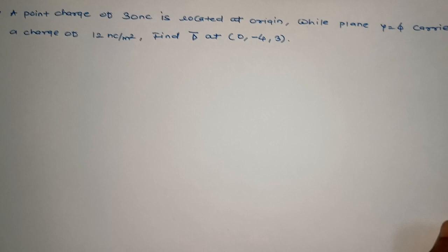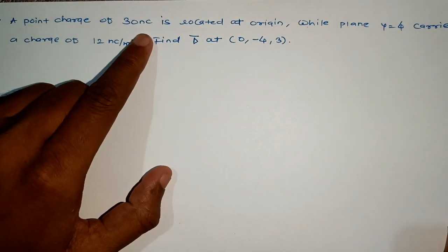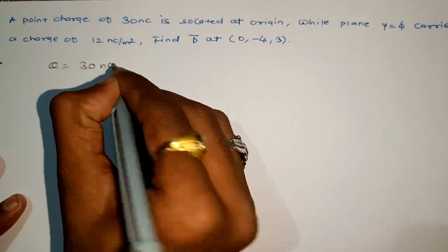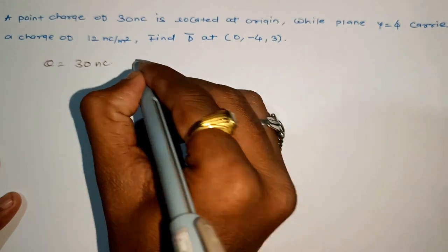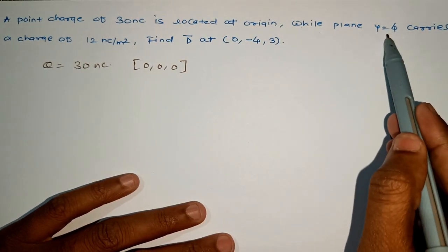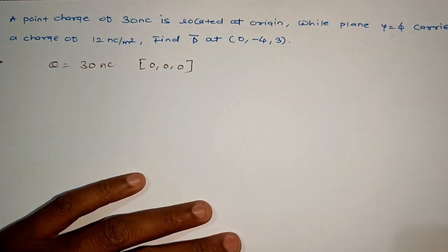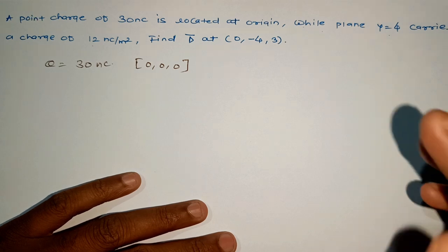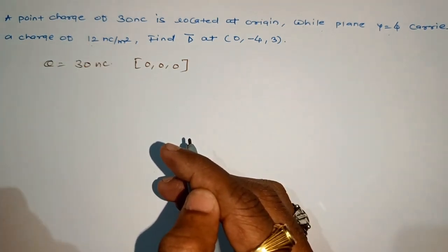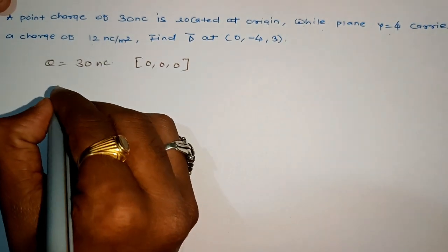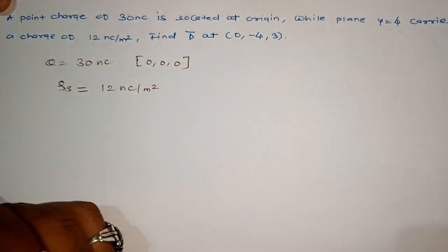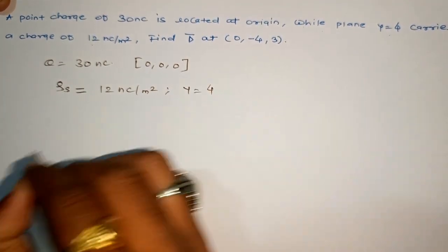Now the second question: a point charge of 30 nanocoulombs is located at the origin (0,0,0). Also, the plane y = 4 carries a surface charge density of 12 nanocoulombs per meter square. So we have q = 30 nC at origin, and the plane y = 4 has rho_s = 12 nC/m².